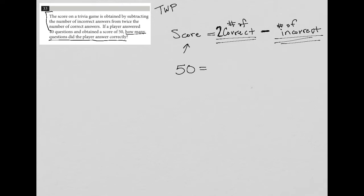I'm going to say that this 50 equals, let's say X equals correct. In this case, 40 minus X equals incorrect.